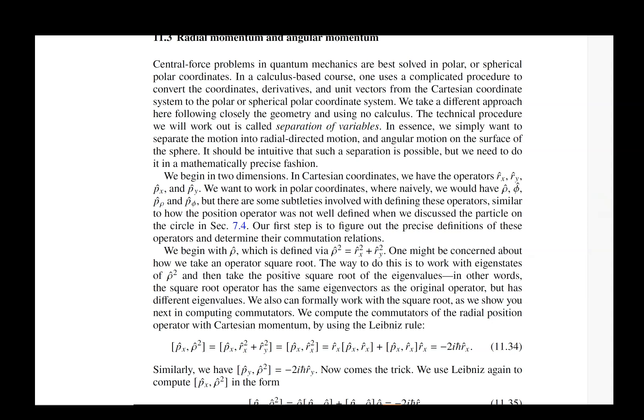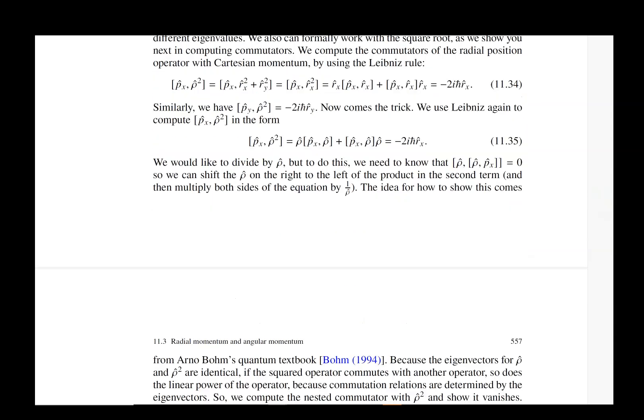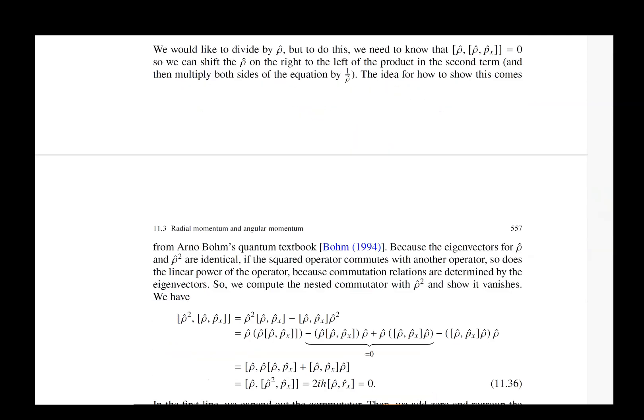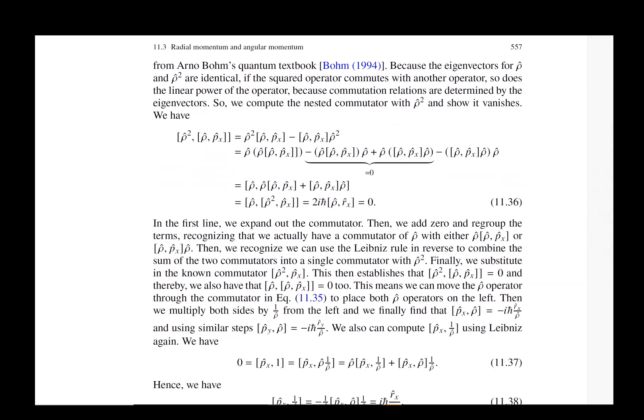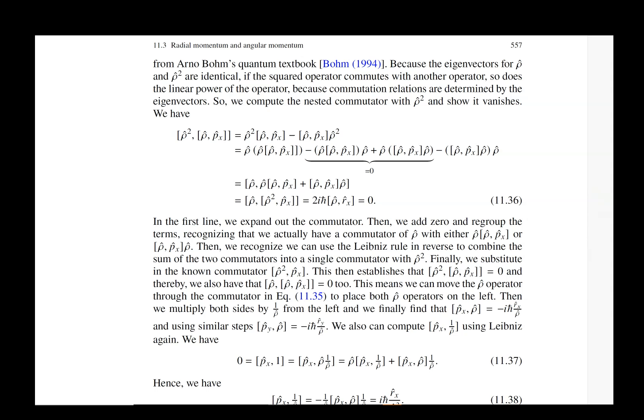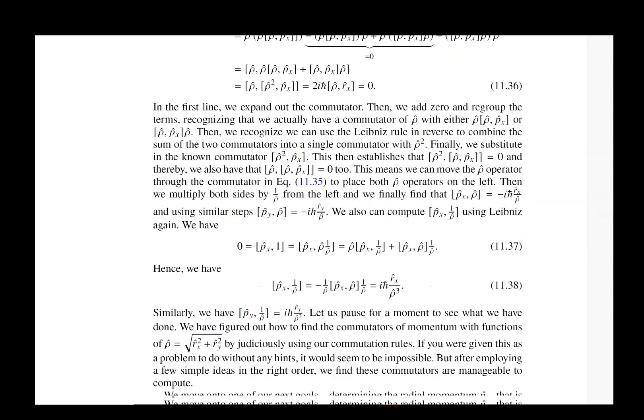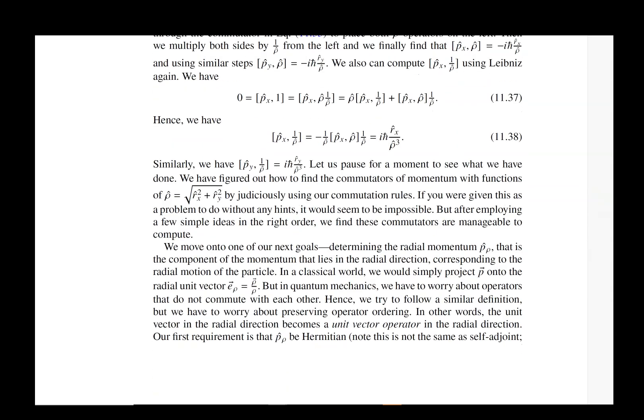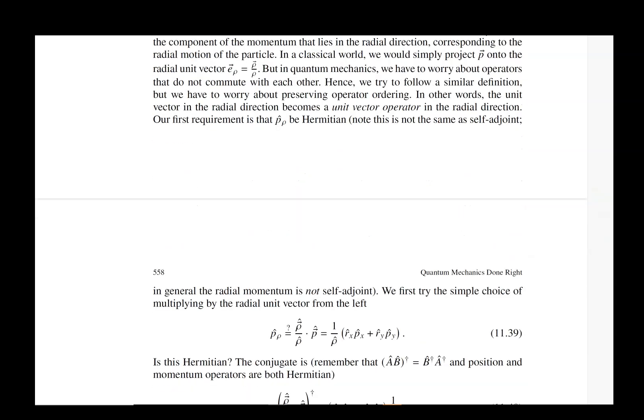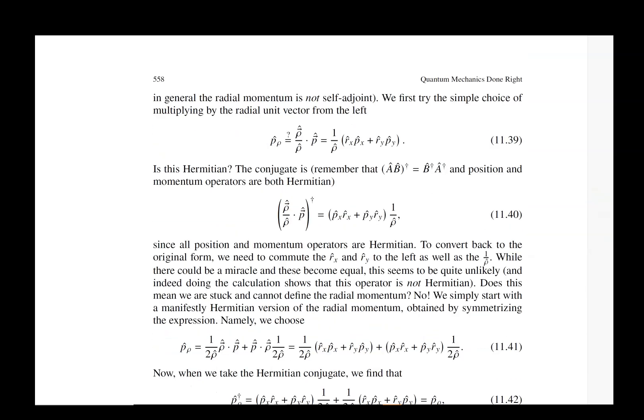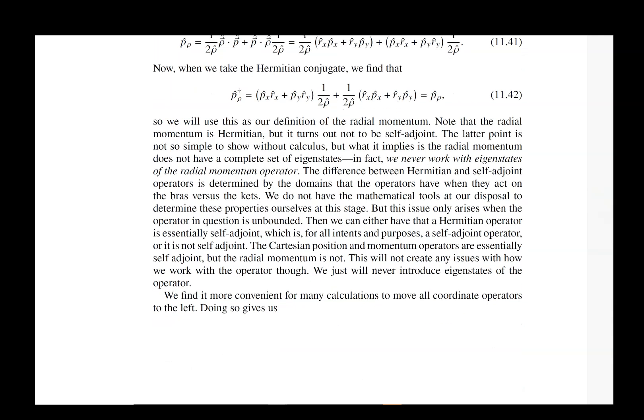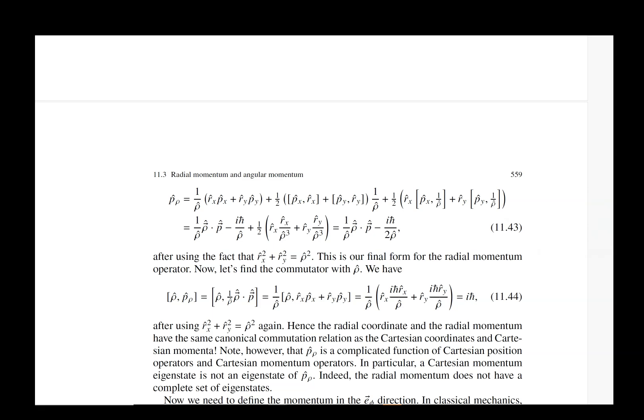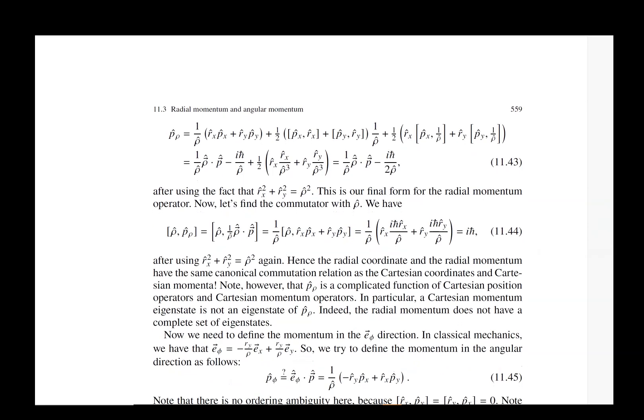One of the important things to work out is separation of variables. To do that we have to define the radial momentum—the component of momentum along the radial unit vector in spherical coordinates. It is not a self-adjoint operator, so we never look at eigenvalues of that operator or work with states that have definite radial momentum.